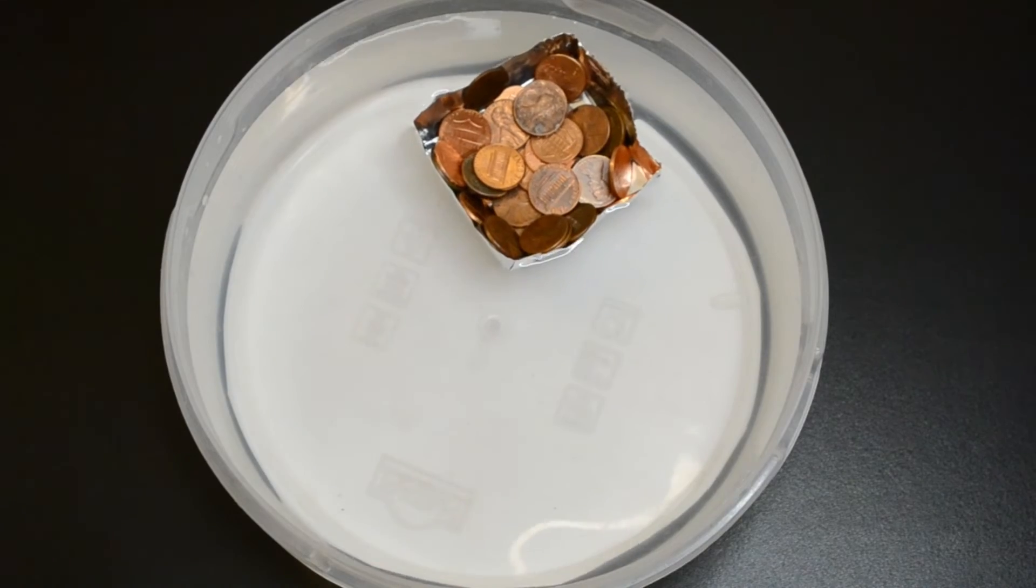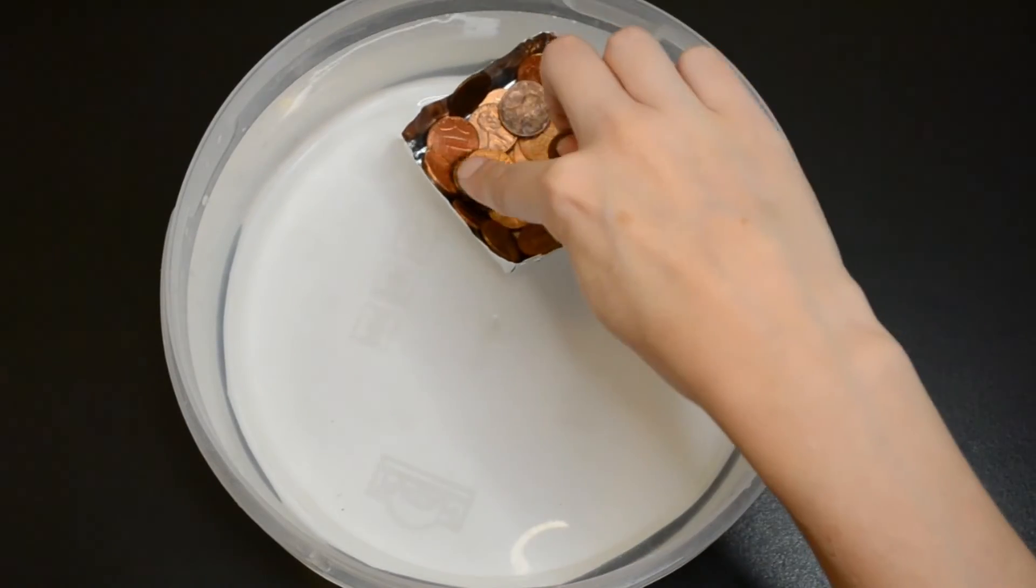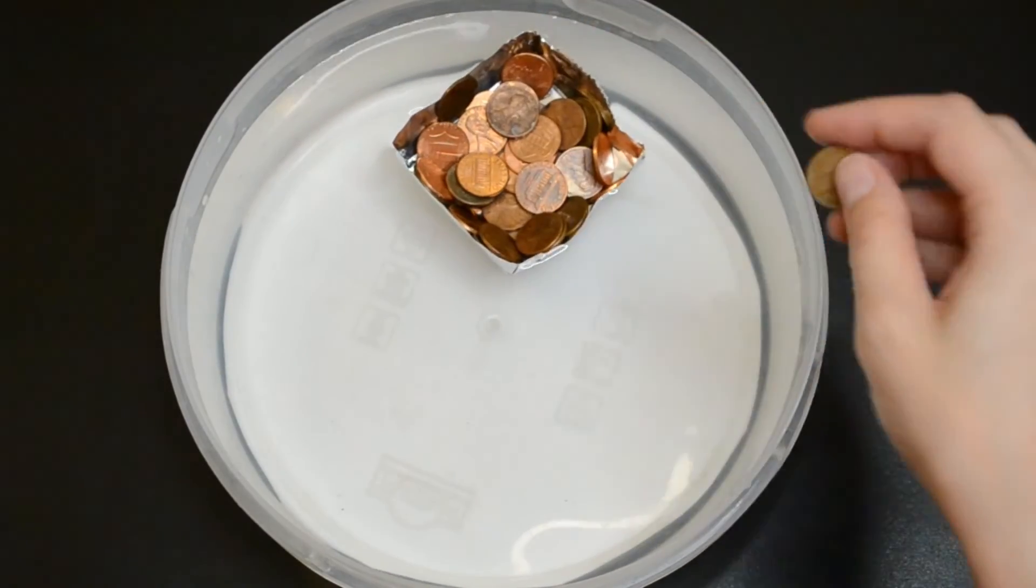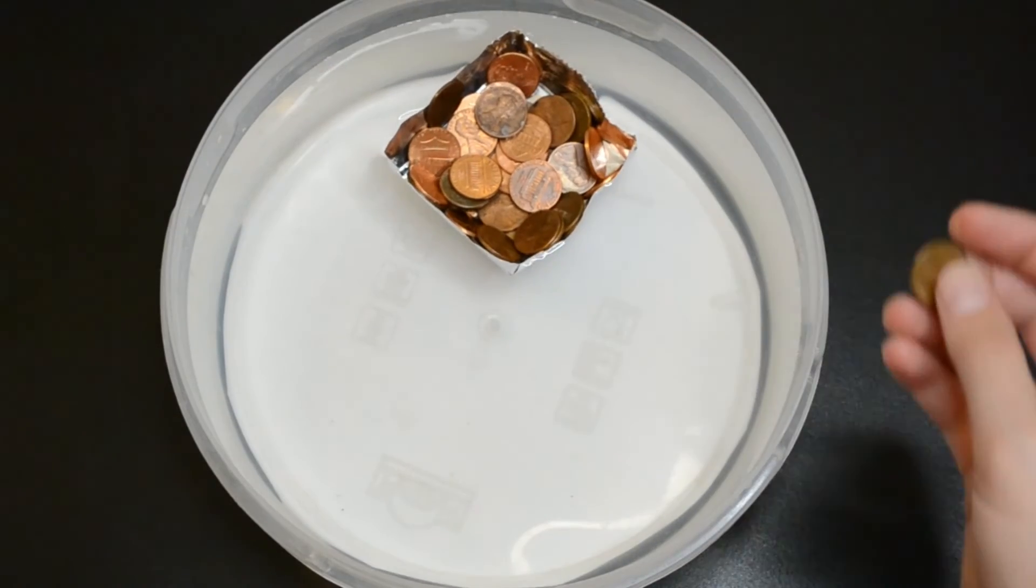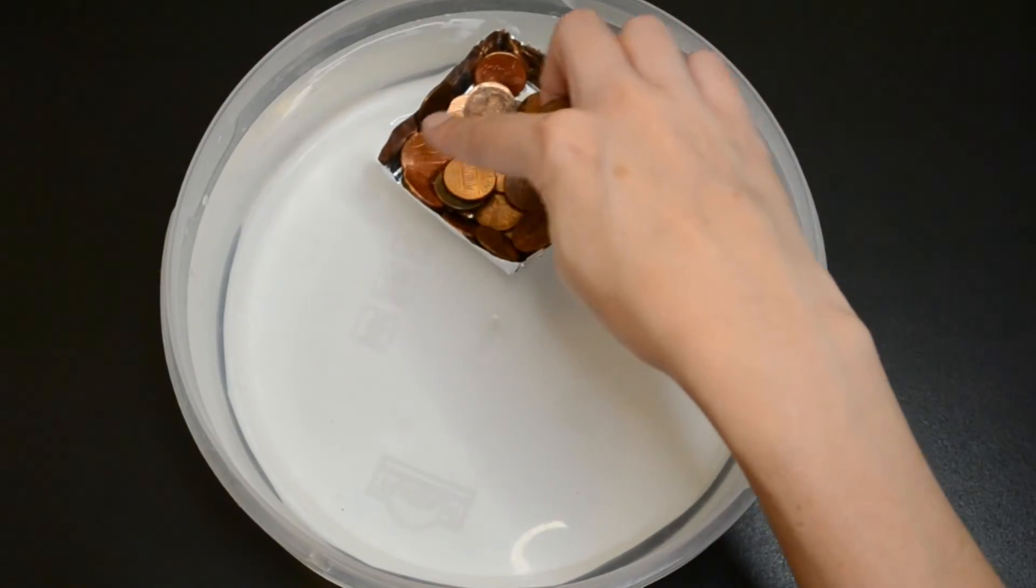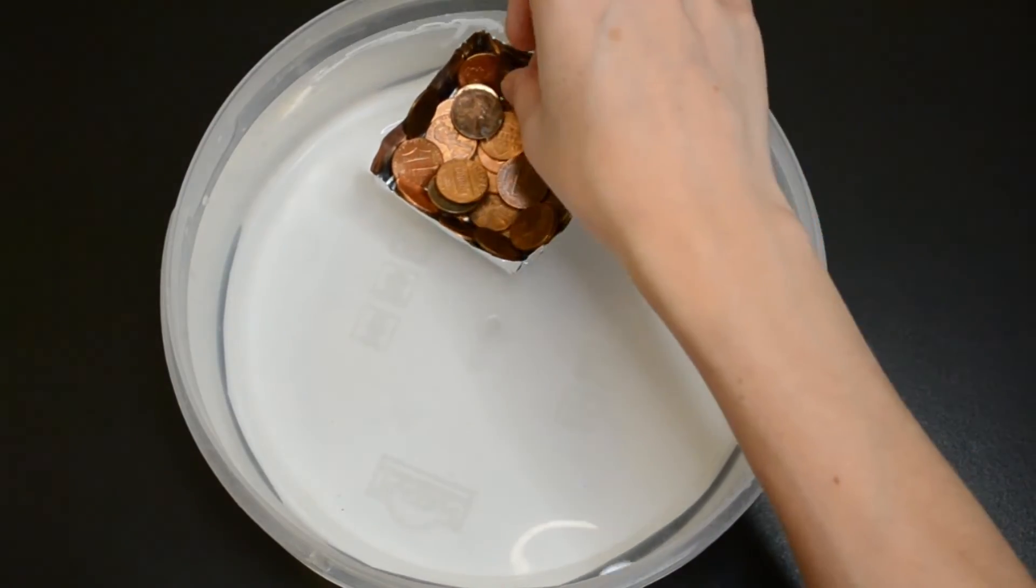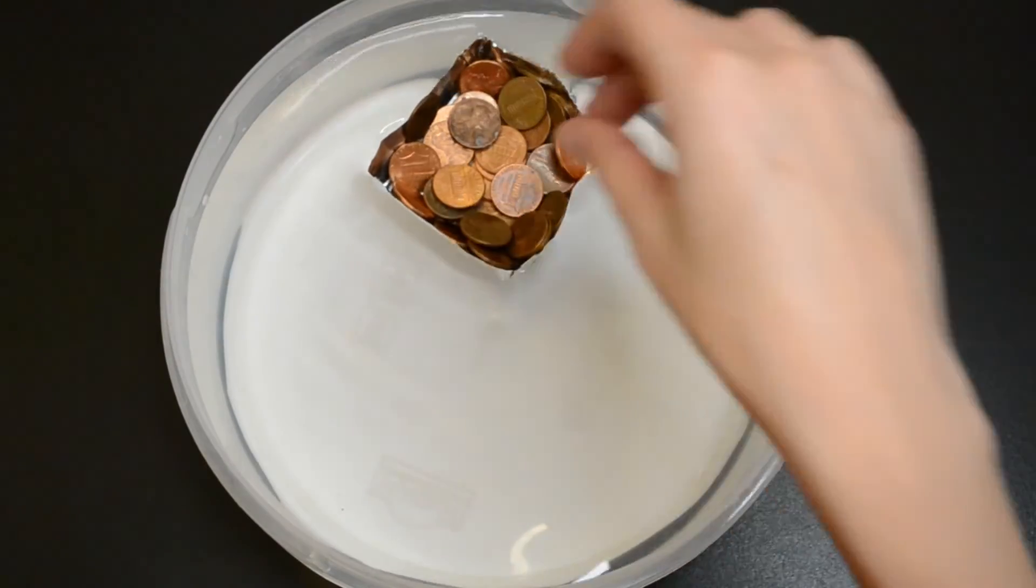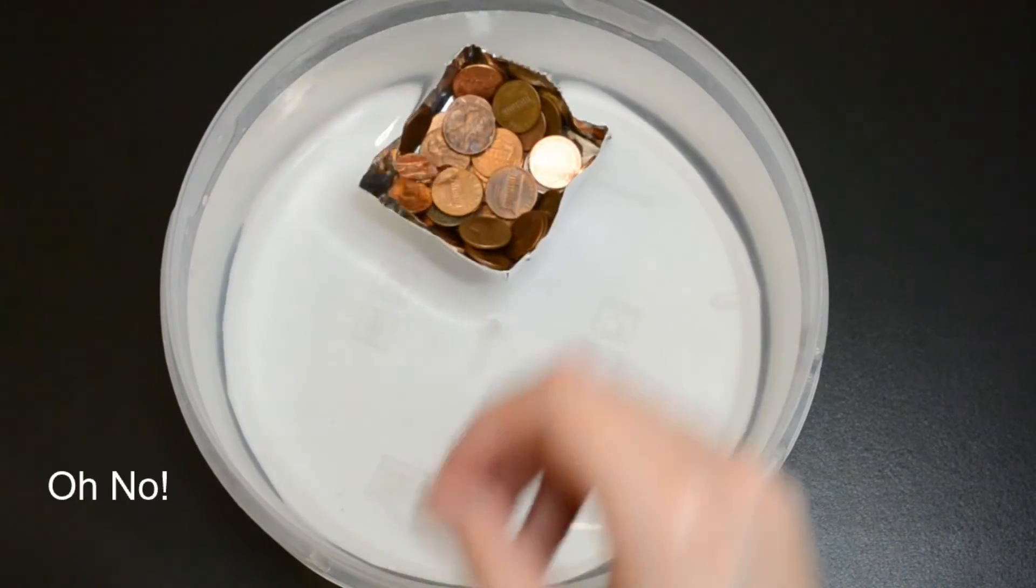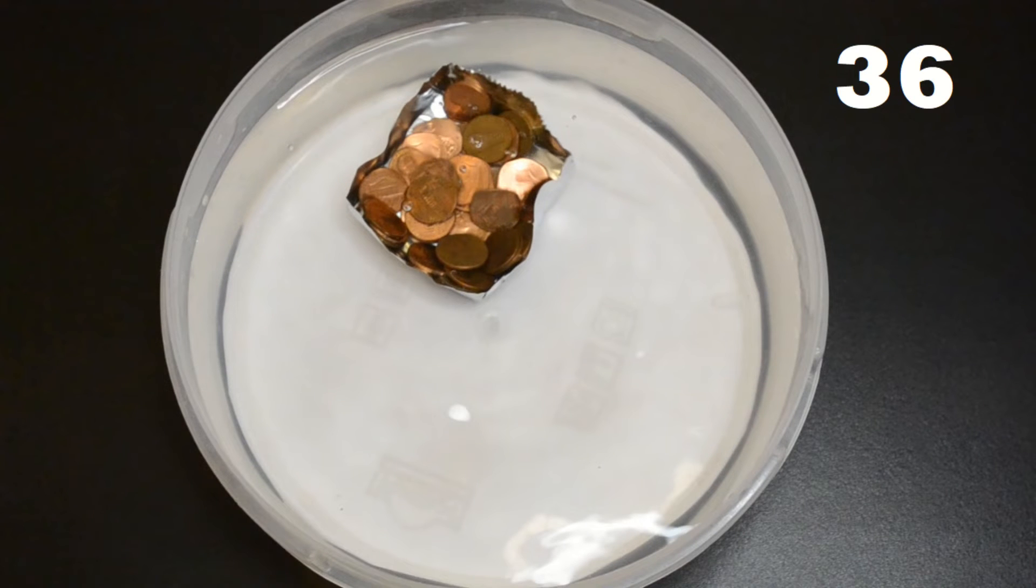We're at 34 pennies and I start to see that the top left corner is getting close to the surface of the water because the water is starting to form around the foil. So now we have 35, 36, 37, oh and it goes down. This is actually more than we predicted and I have a feeling that it has to do with the surface tension that I started seeing when we got to around 34 pennies.